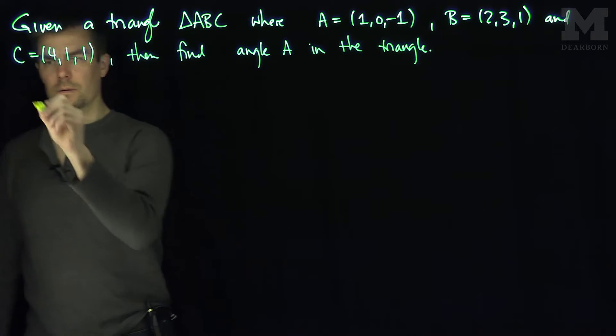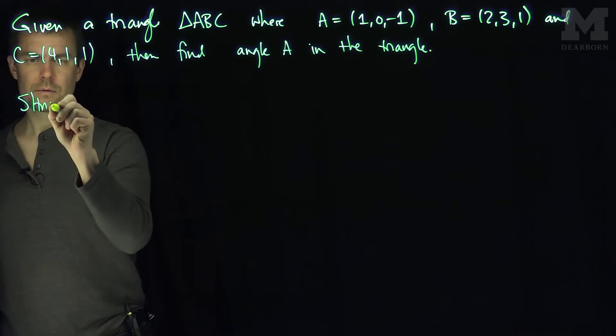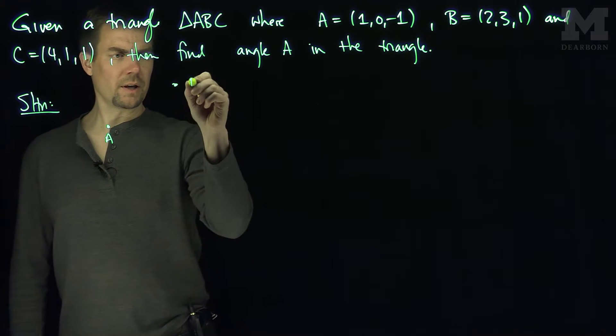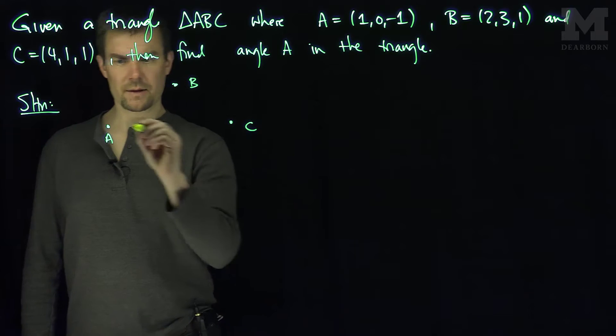So let's do it. Here's our triangle ABC, and we're drawing it abstractly.